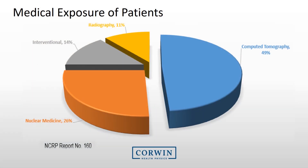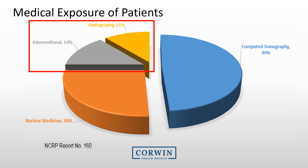Radiation doses from fluoroscopic procedures, including interventional radiology and interventional cardiology, make up about 20% of the medical dose to the U.S. population. While there has been much recent attention to radiation dose from CT and an emphasis on reducing CT dose, the radiation dose contributed from fluoroscopic procedures should not be overlooked.